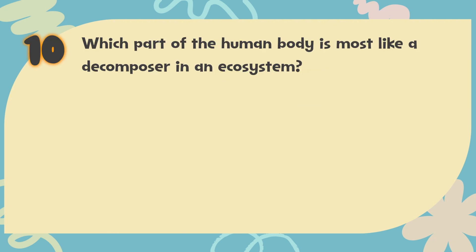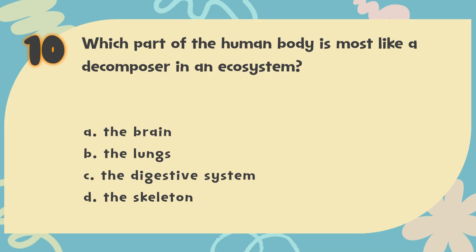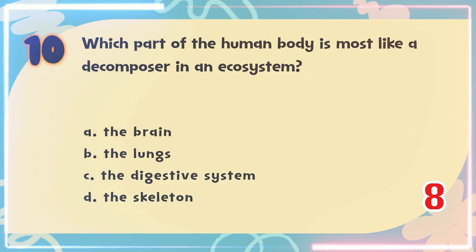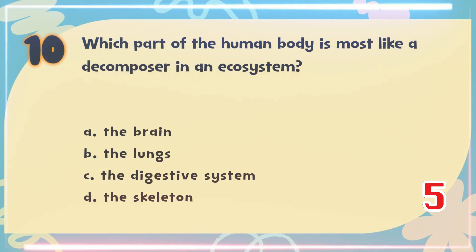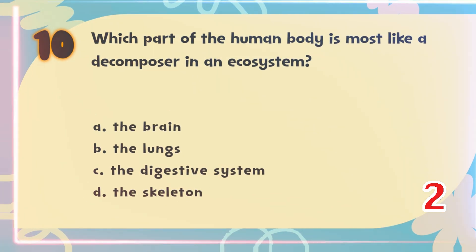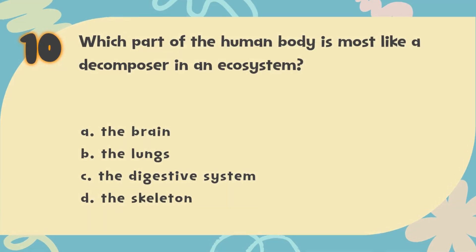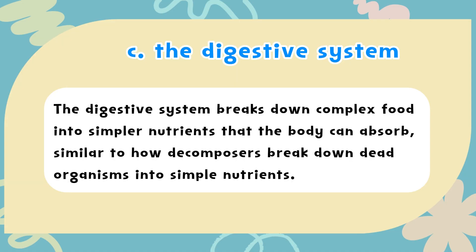Number 10. Which part of the human body is most like a decomposer in an ecosystem? The choices are: A. The brain, B. The lungs, C. The digestive system, D. The skeleton. The correct answer is C. The digestive system. The digestive system breaks down complex food into simpler nutrients that the body can absorb — similar to how decomposers break down dead organisms into simple nutrients.